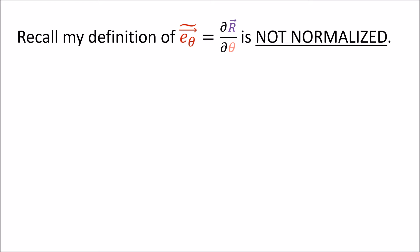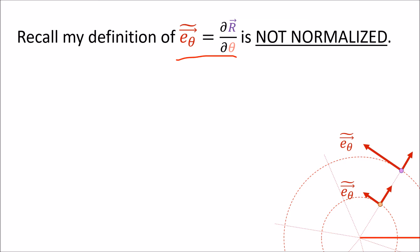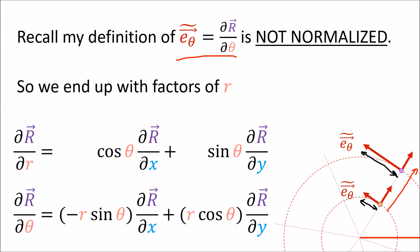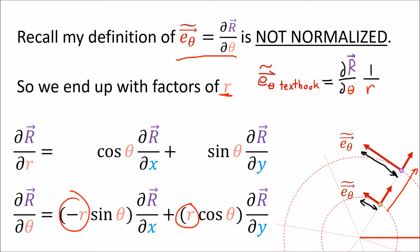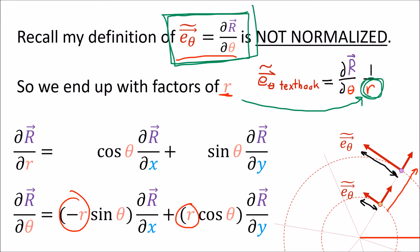I should mention again that the definition I'm using for this basis vector E_θ is not normalized. As you can see here, this basis vector is growing in size when we move farther from the origin, and because of that we end up with these factors of R. Some textbooks will normalize E_θ so that it always has length 1, and in that case you wouldn't see these extra factors of R because they're actually hiding inside the definition of the basis vector. I'm sticking with the un-normalized version of E_θ because I want to be able to think of basis vectors purely as partial derivatives without any weird scaling constants.